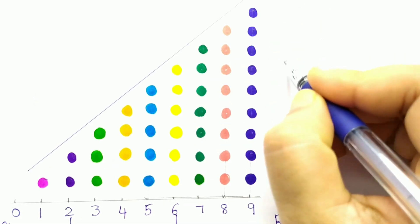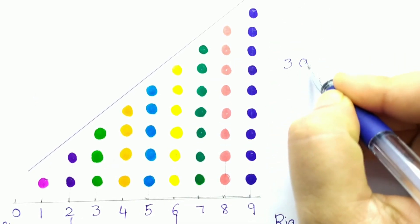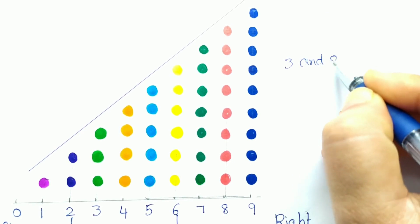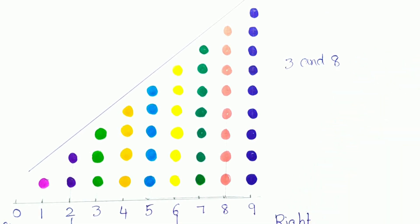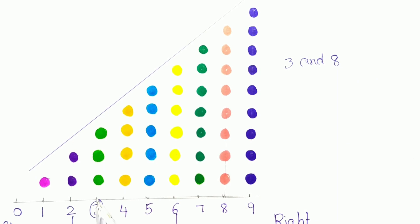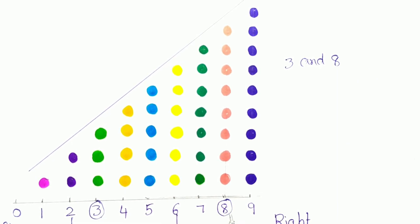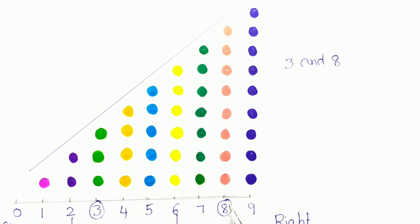Let's take 3 and 8. See where is 3? 3 is here and 8 is here. In these two numbers, which is on the left side? 3 is on the left side and 8 is on the right side. So 3 is the smaller and 8 is the bigger number.